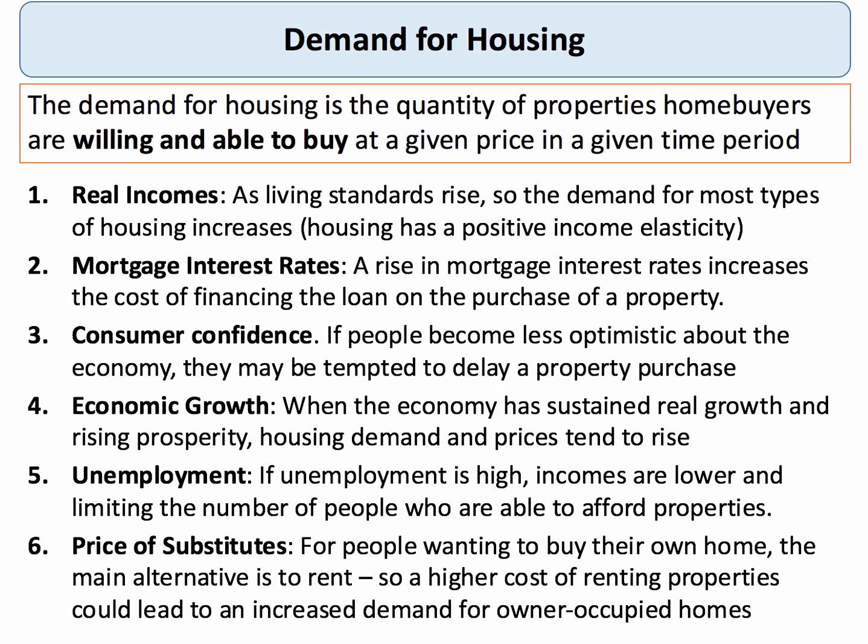So what are the key factors affecting the market demand for homes? Let's focus here on the demand side of the market. Keep in mind that demand is the quantity of a good or service that consumers are willing and able to buy at a given price in a given time period. So the idea of effective demand is particularly important in the housing market. The first key demand side factor must be the level of real income of potential homebuyers. As per capita incomes rise, so the demand for most types of housing goes up. Indeed housing is widely assumed to have quite a strong positive income elasticity of demand.